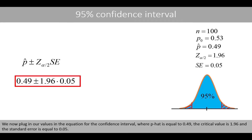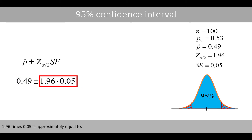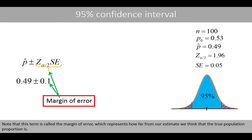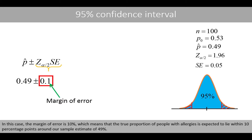We plug in our values in the confidence interval equation, where p-hat equals 0.49, the critical value is 1.96, and the standard error is 0.05. 1.96 times 0.05 is approximately 0.1. Note that this term is called the margin of error, which represents how far from our estimate we think the true population proportion is. In this case, the margin of error is 10%, meaning the true proportion of people with allergies is expected to lie within 10 percentage points around our sample estimate of 49%.